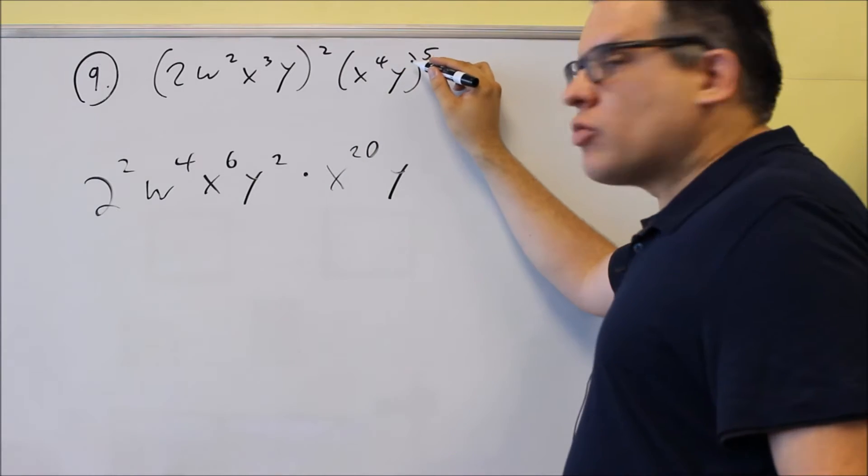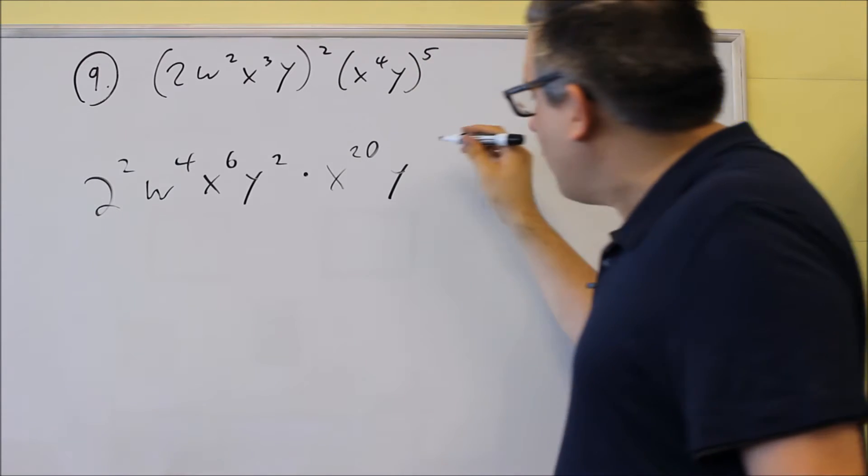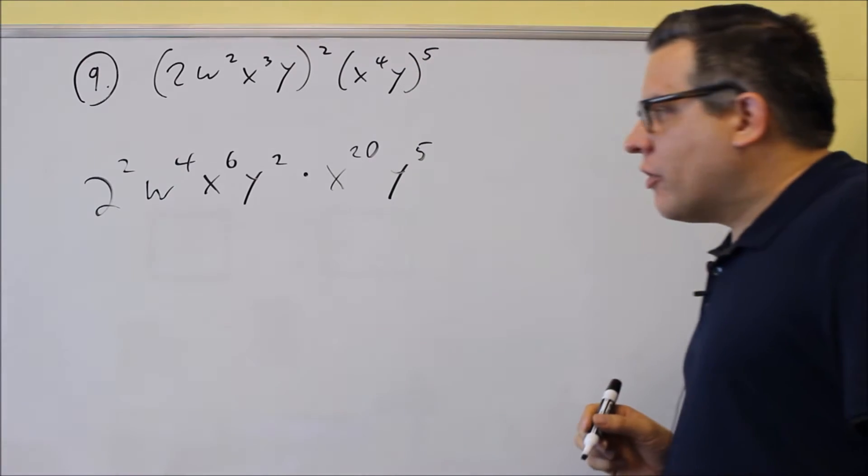Don't forget to do this one also. This is Y to the first power. Multiply that by 5. You get Y to the fifth.